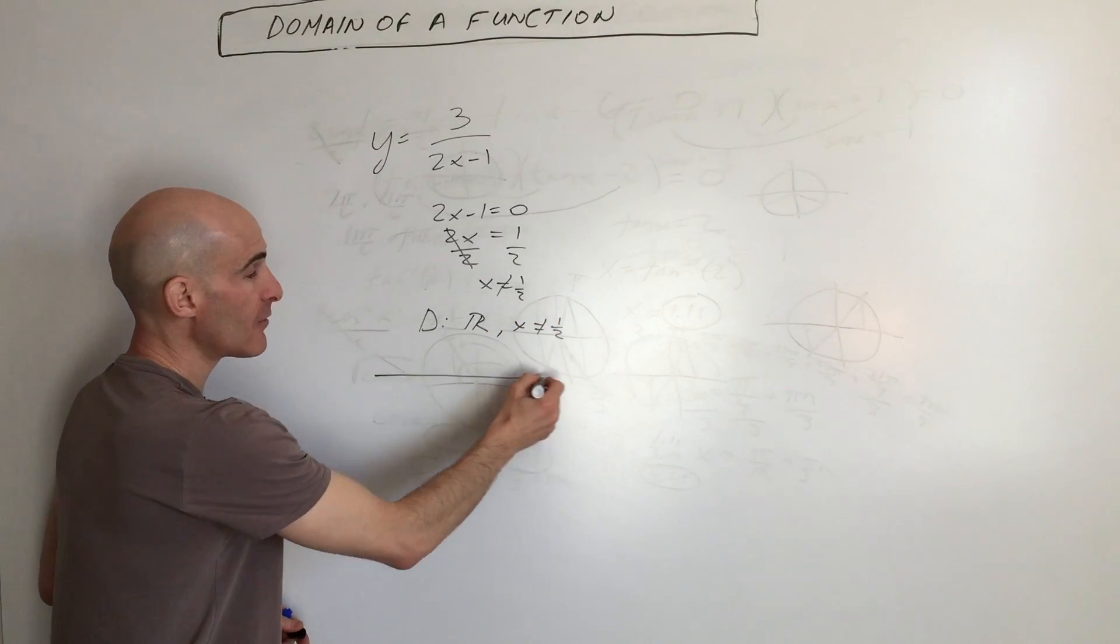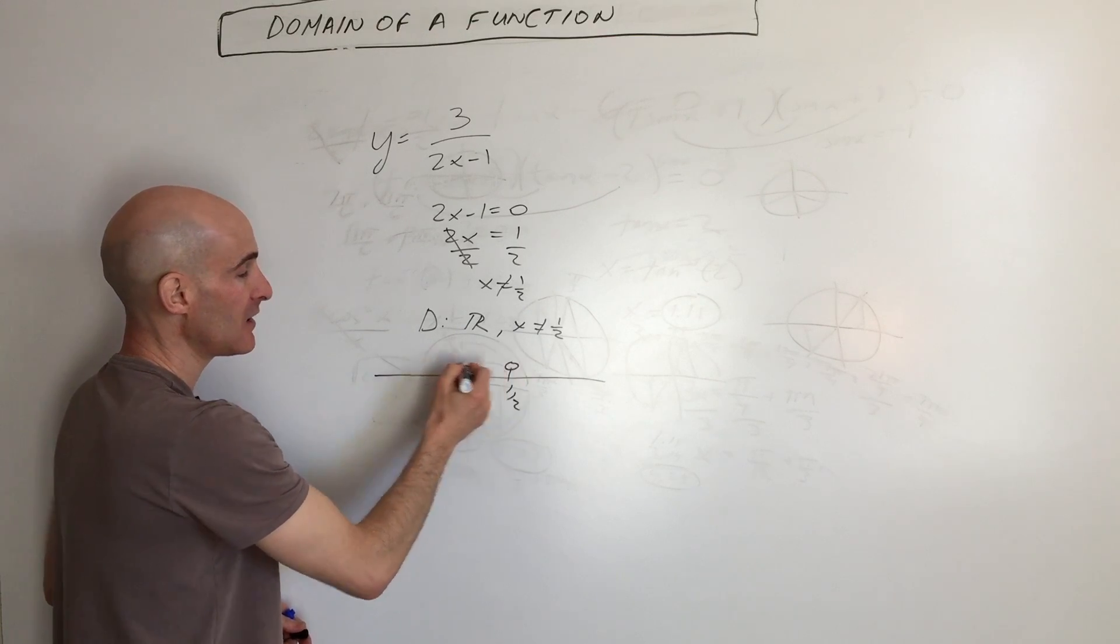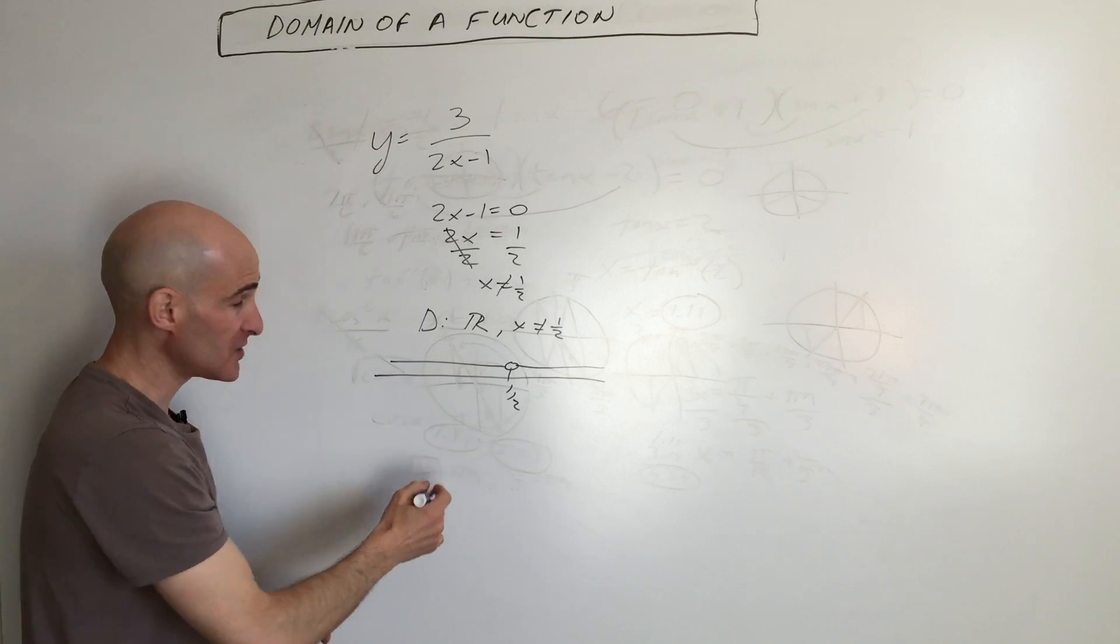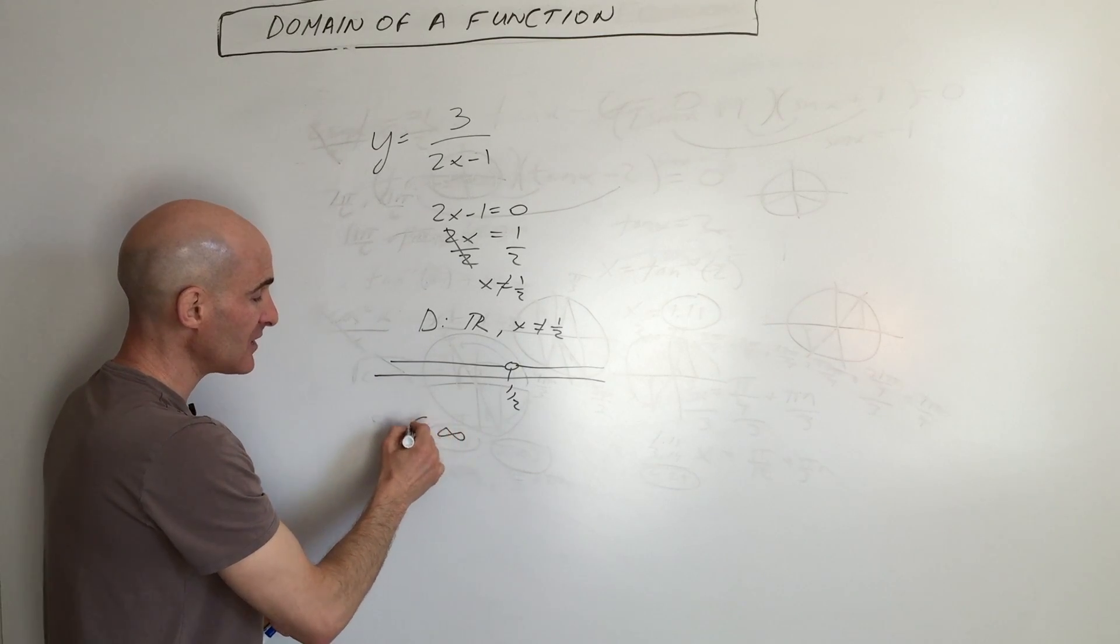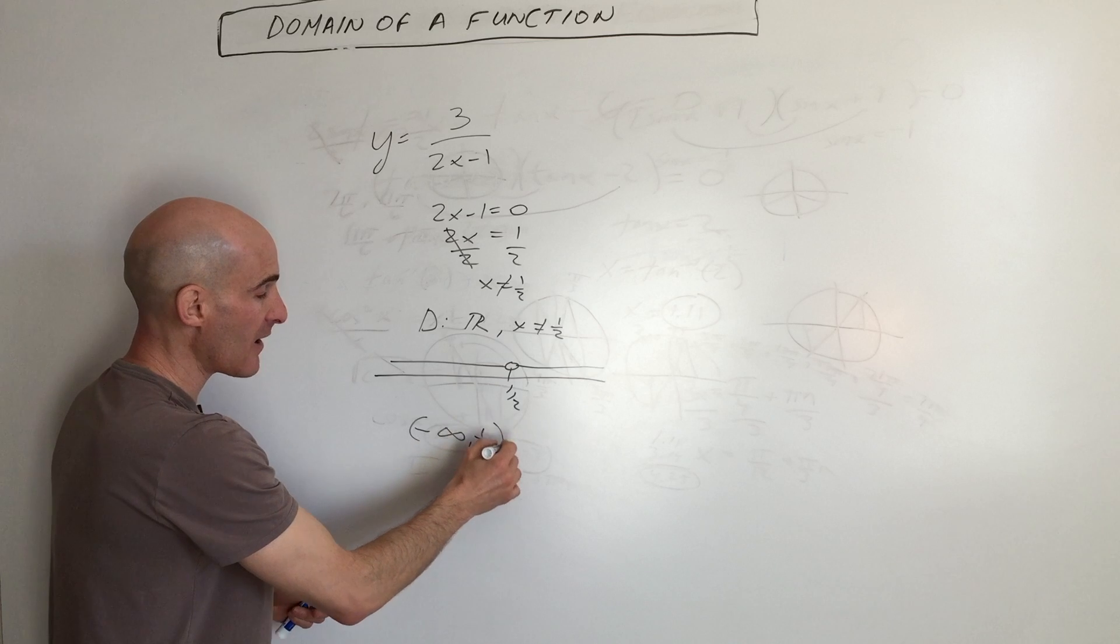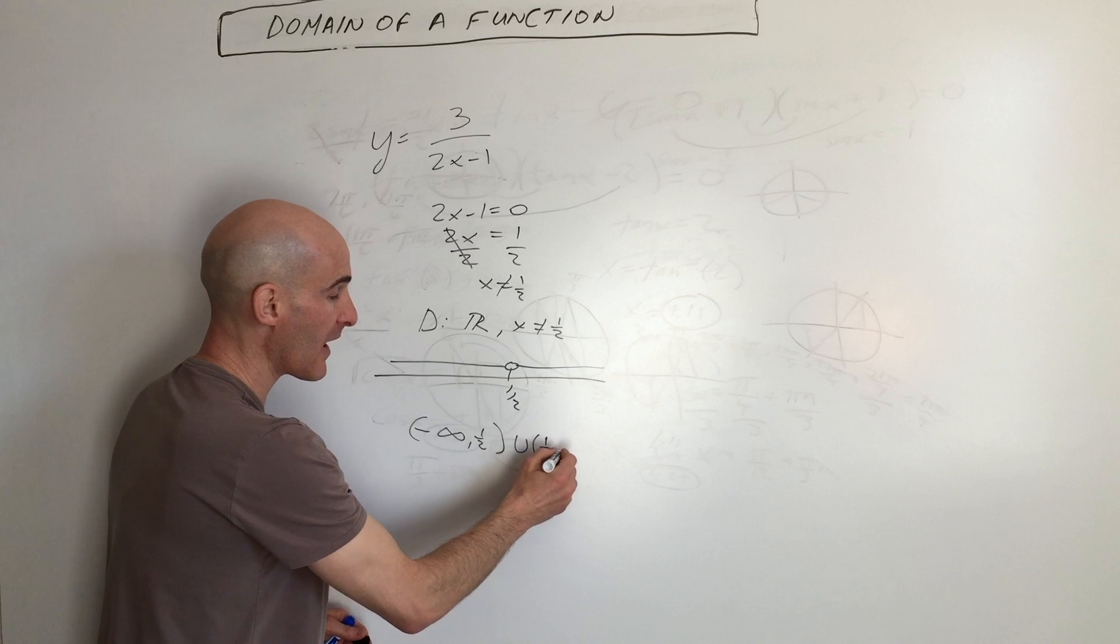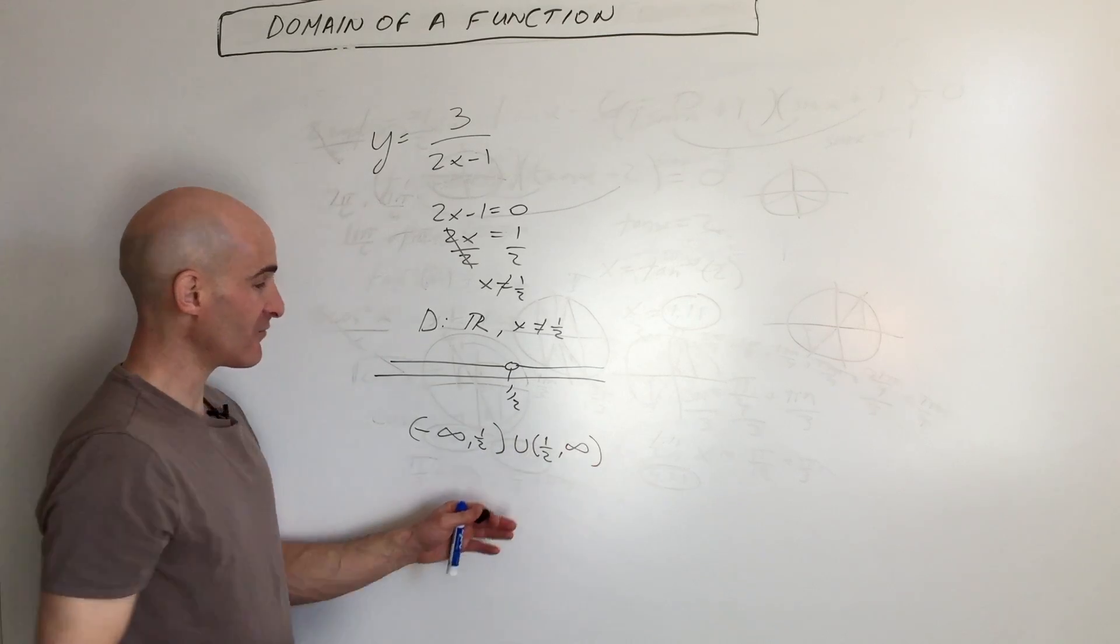Or you can think of the number line. You could say here's a half. It's everything except for a half. So what we can do if we use the interval notation is negative infinity to positive one-half, curved bracket doesn't include one-half, union one-half to positive infinity.